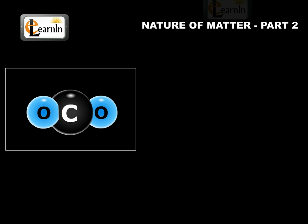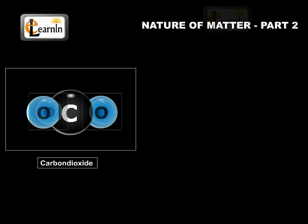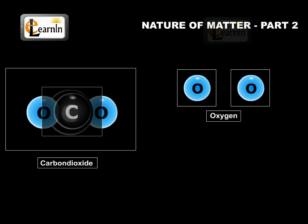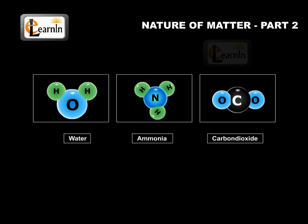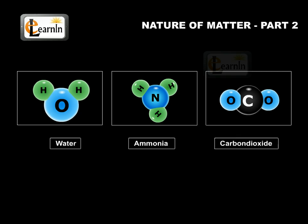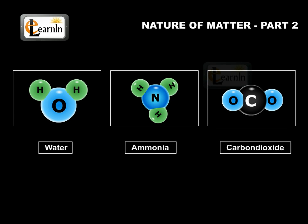Similarly, a molecule of carbon dioxide contains two oxygen atoms combined with one carbon atom. Thus, the atoms of different elements are present in a compound in a fixed and definite ratio, and this ratio is a characteristic of a particular compound.